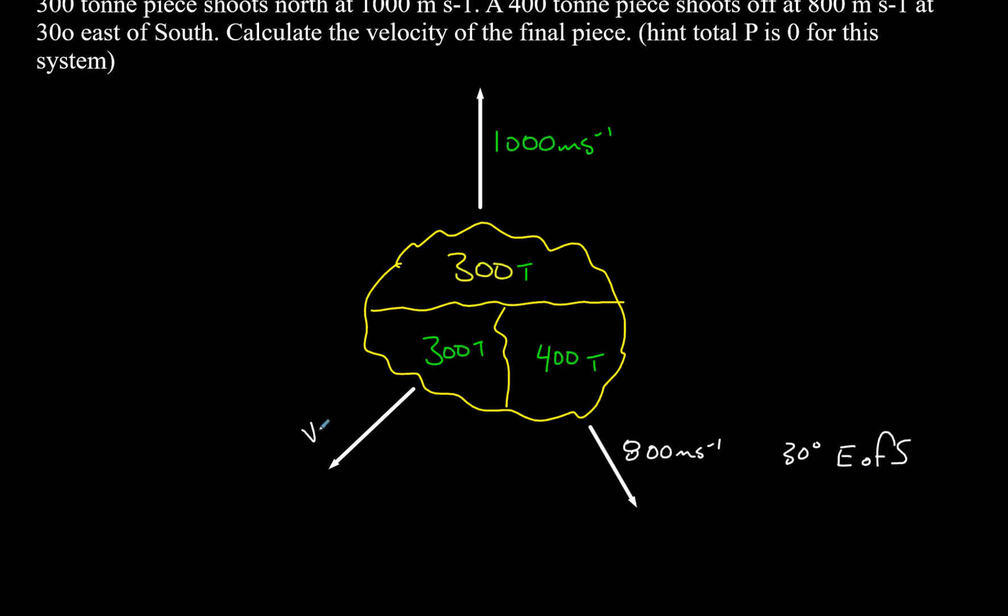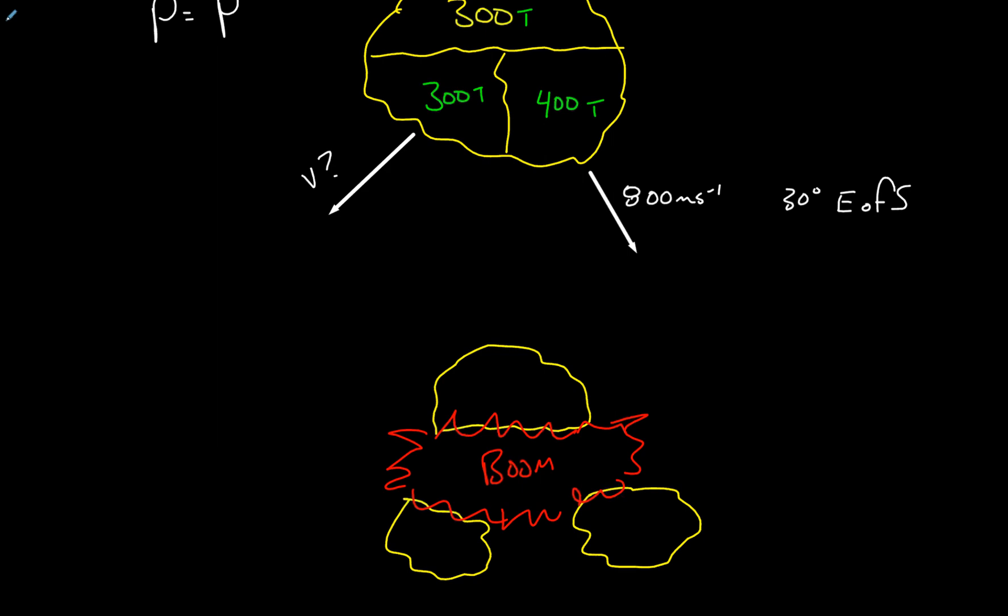So we're really looking for the velocity here. You can't find that directly, but you can understand that if this object is still and it explodes into three pieces, then the momentum before the explosion and after the explosion is going to be the same and it's going to be equal to zero. So momentum before, momentum after are equal to each other. What we'll do is we'll solve for the momentums of each of these pieces, and then we'll find the sum of the two momentums that we know and realize that the third momentum is going to be equal and opposite to what that value is.